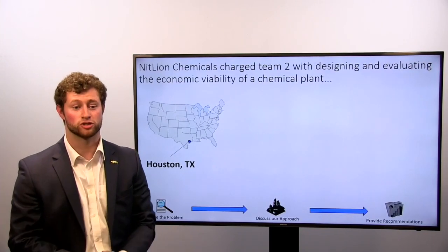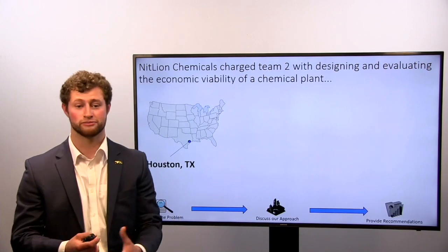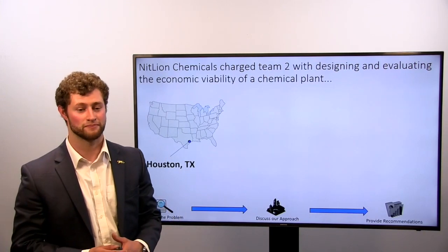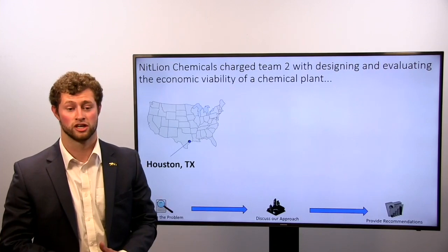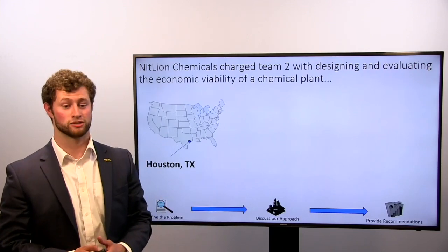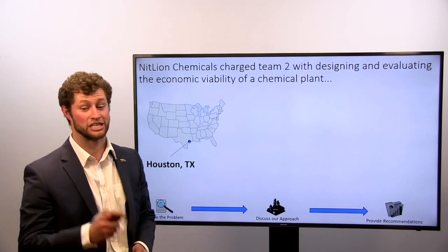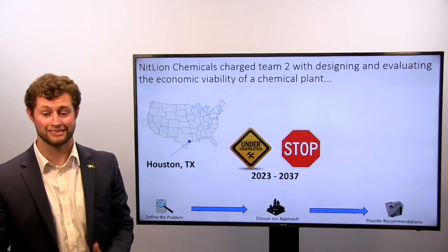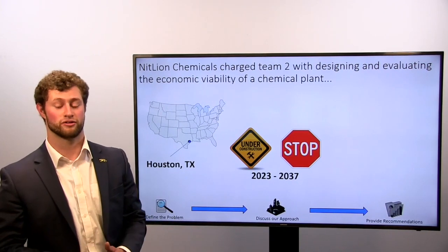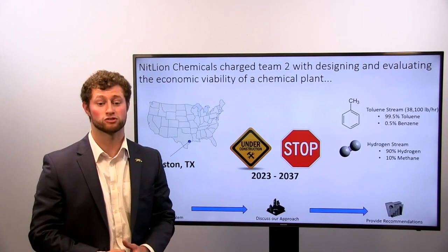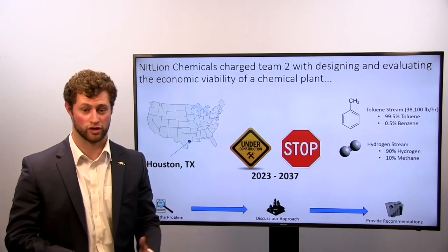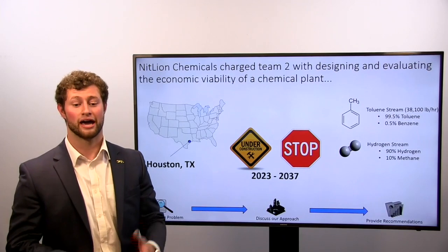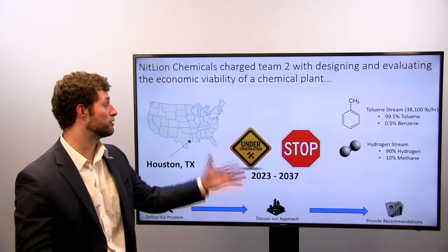Our sponsor KnitLion Chemicals charged us, Team 2, with designing and evaluating the economic viability of a chemical plant. They gave us a location — Houston, Texas by the Gulf Coast — and the years of operation: the plant must be built by 2023 and stop operation in 2037. Finally, they gave us a toluene stream of about 38,100 pounds per hour and a hydrogen stream with the following components.